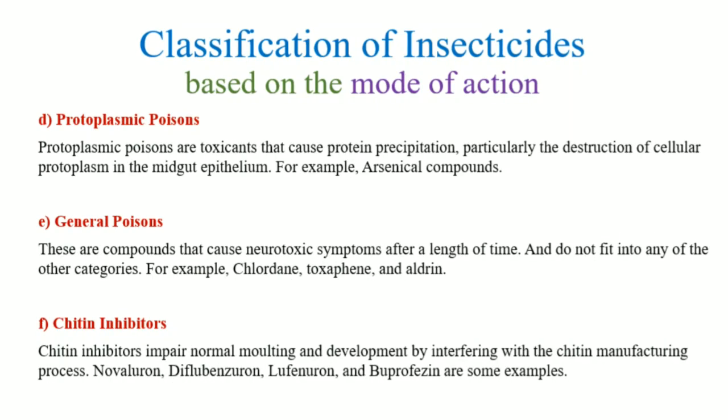Next are protoplasmic poisons. These are toxicants which cause precipitation of proteins, destroying the cellular protoplasm, specifically the mid-gut epithelium cells. An example is arsenical compounds.